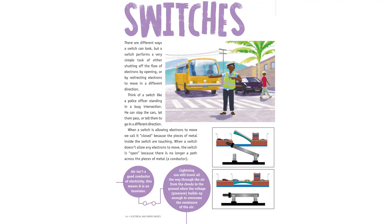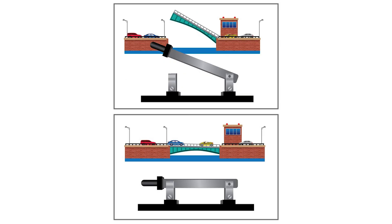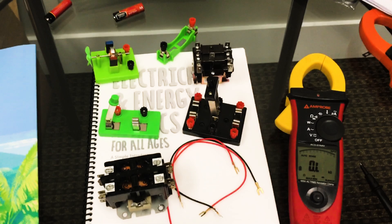We talk about switches as being like a police officer who directs traffic — tells you when to stop, tells you when to go, and tells you to go in different directions. We also show the opening and closing of a switch: a closed switch is like a closed drawbridge where the electrons, or cars, can go across, and when the drawbridge opens the electrons can't travel across.